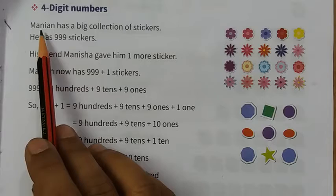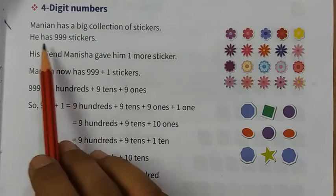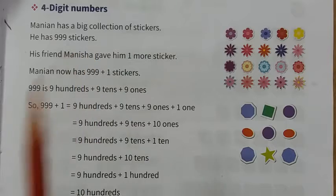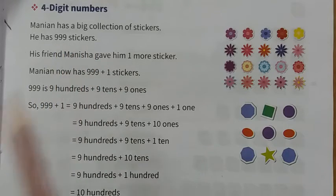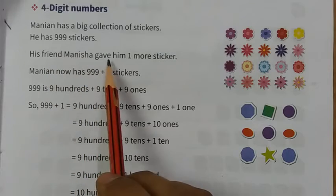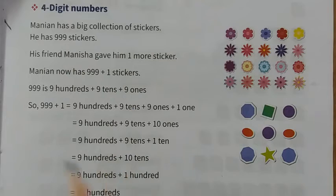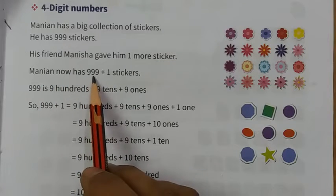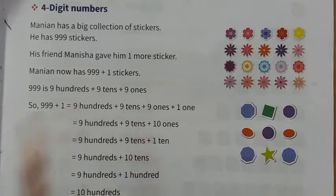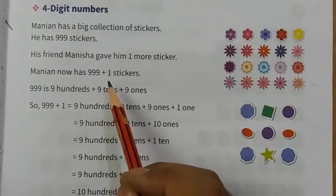Look here. Mannion has a big collection of stickers. He has 999 stickers. His friend Manishah gave him one more sticker. Now Mannion has 999 plus one sticker. Now we have to total how many stickers we have.